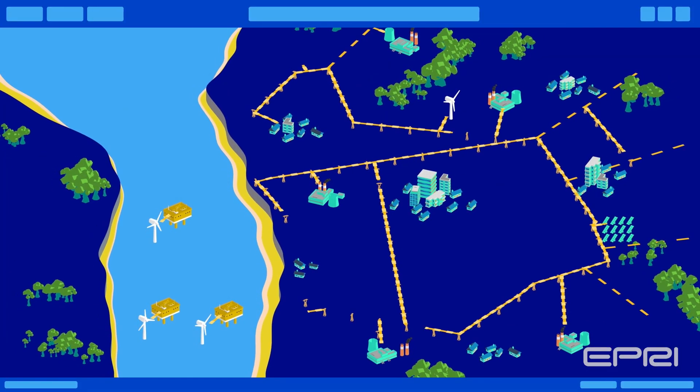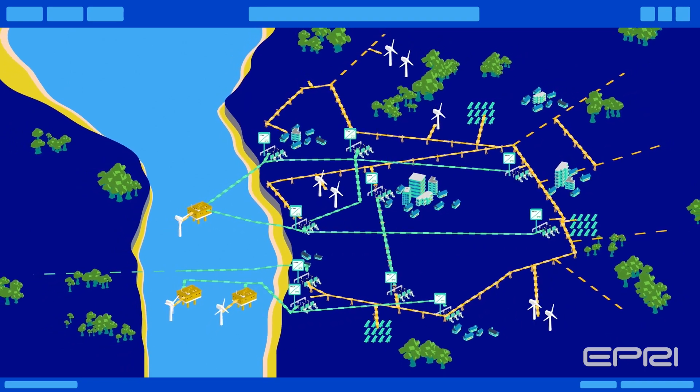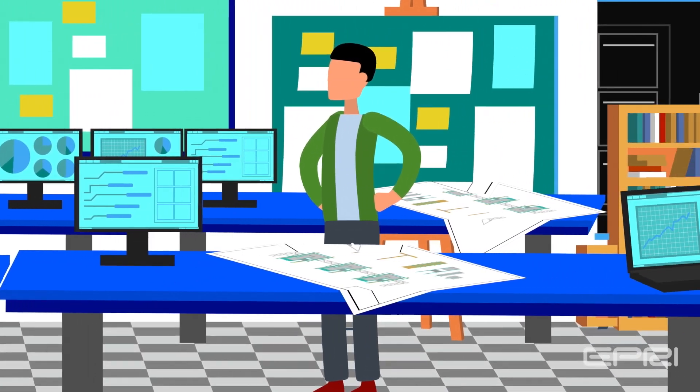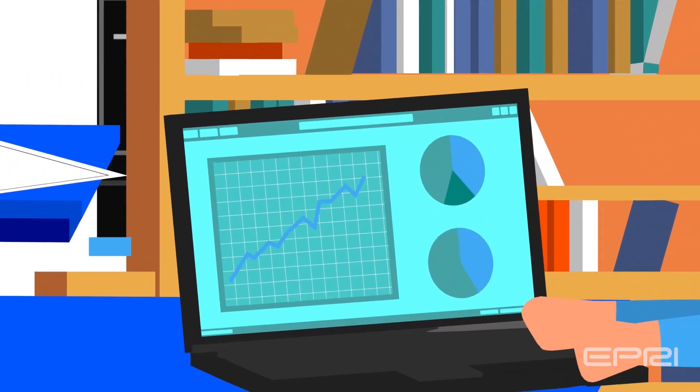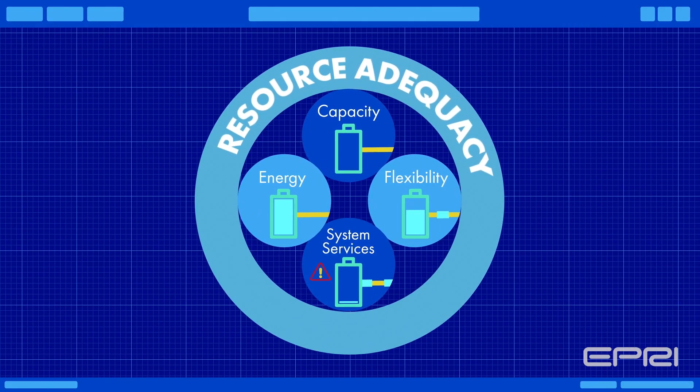As the electricity system is changing, how resource adequacy is assessed needs to evolve. EPRI is addressing these challenges through its ongoing R&D, including a large, soon-to-be-completed collaborative project that will provide system planners with the tools to modernize resource adequacy assessment.